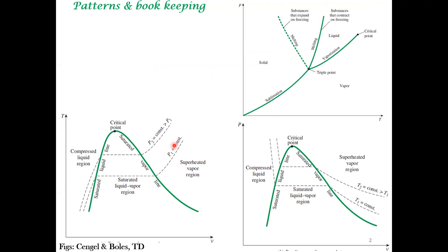There is a pattern to observe. In the single-phase region — whether solid, liquid, or vapor — when you fix the pressure, you can change the temperature without changing the phase. But that's not so when you have more than one phase. All these observations are compactly represented by a rule whose derivation I'm not providing here; we need to address a few more things before we can get to that, maybe towards the end of the course. But this formula is a useful bookkeeping device as of now.